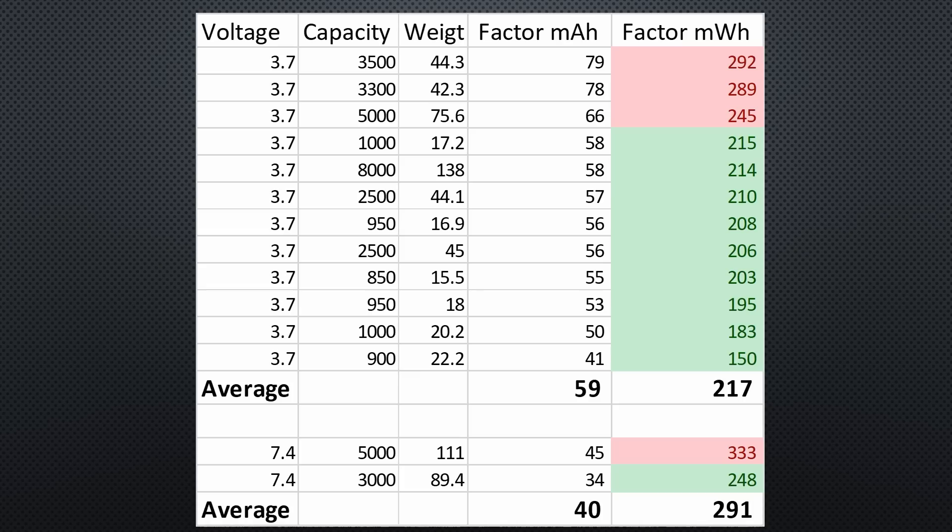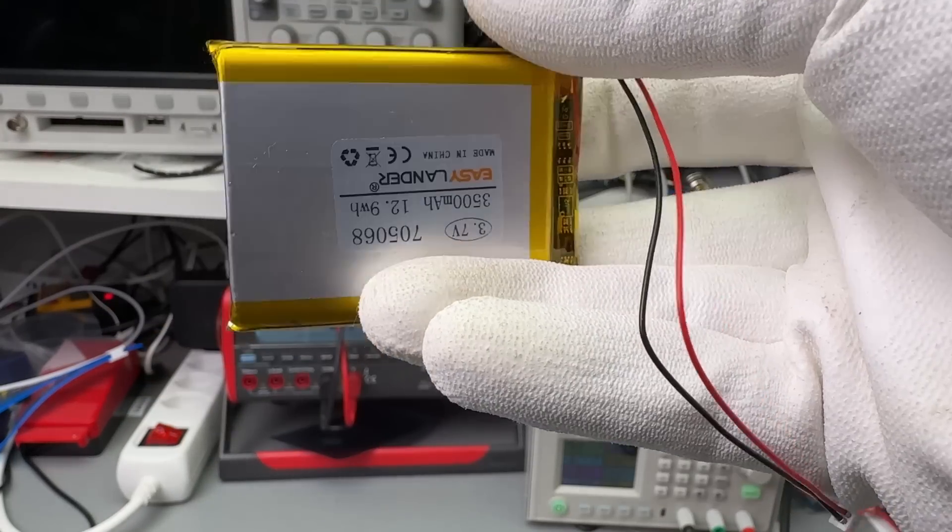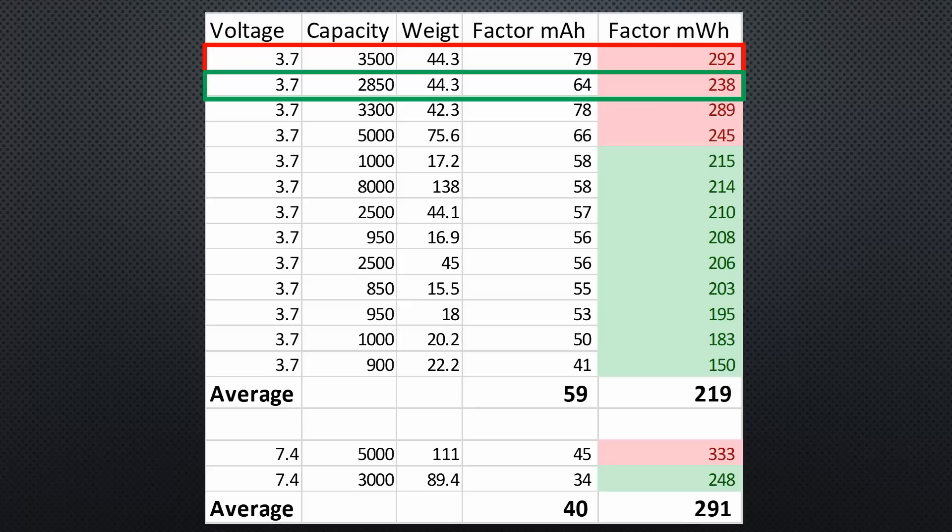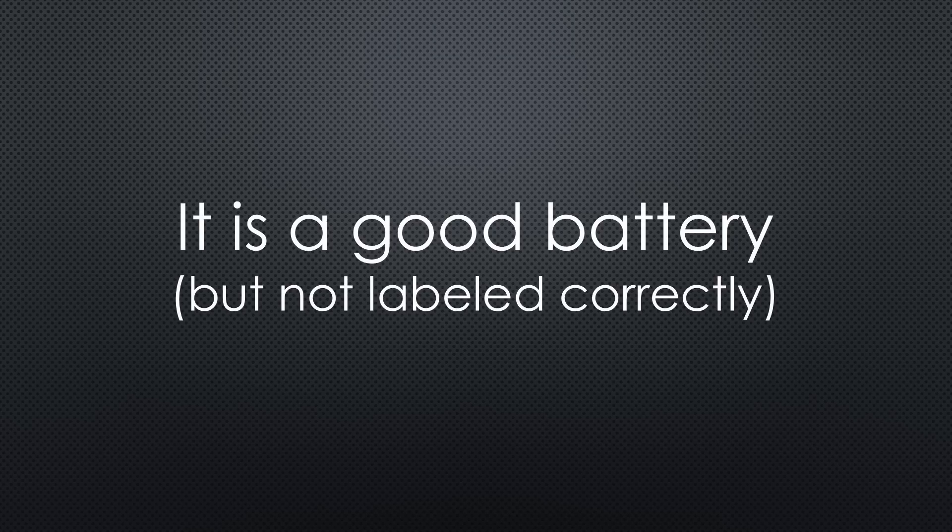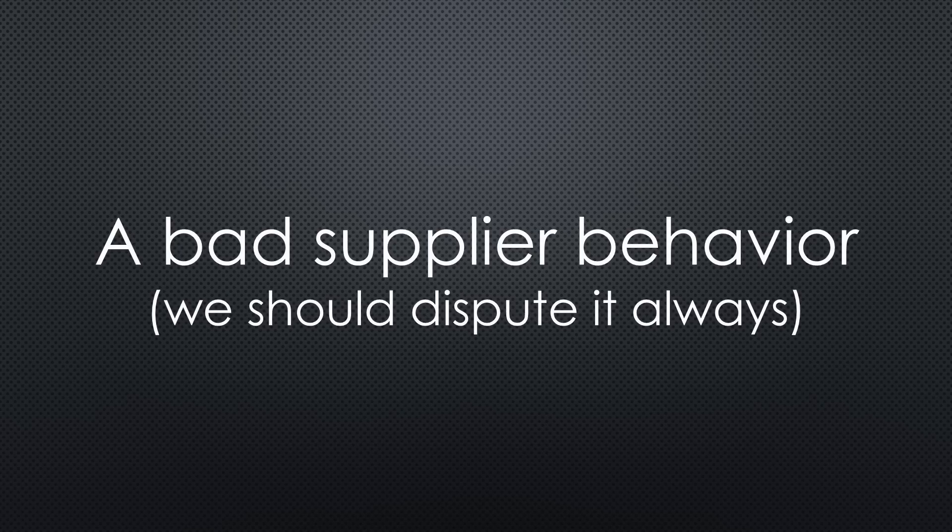This one with the extremely high factor is new. So I tested its capacity and only got 2850 instead of 3500 mAh. Even with the actual capacity, its factor is high. Despite the mislabeled capacity, it still showed decent quality, just not correctly labelled. Mislabelling is a typical supplier behaviour, particularly for batteries. That is why I usually start a dispute to remind suppliers that cheating does not pay.